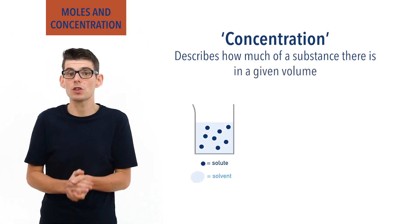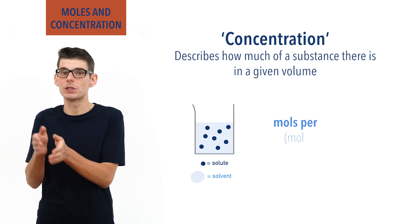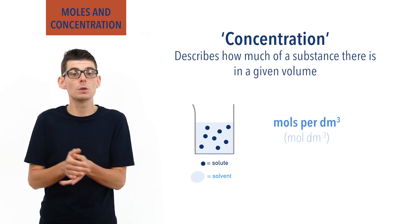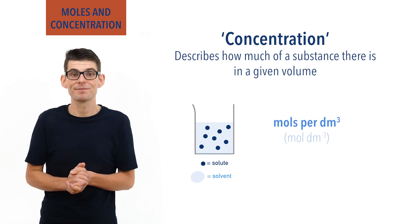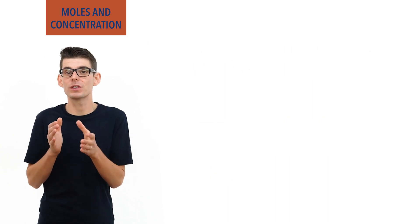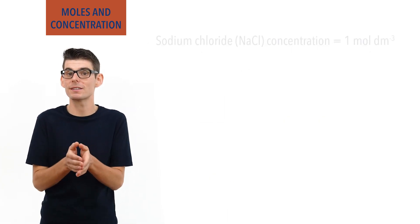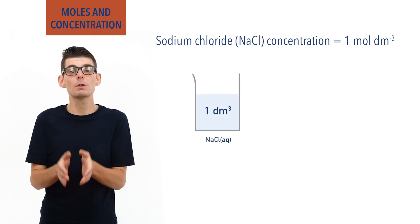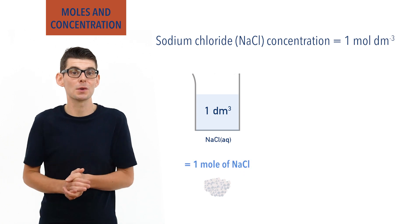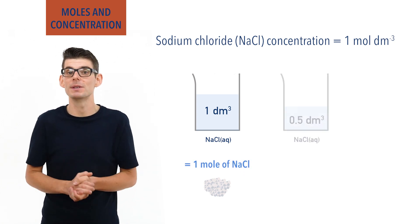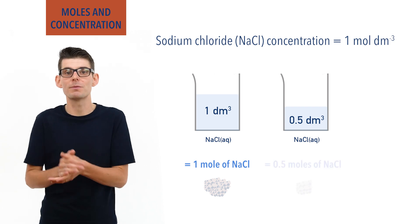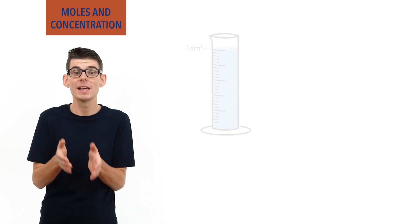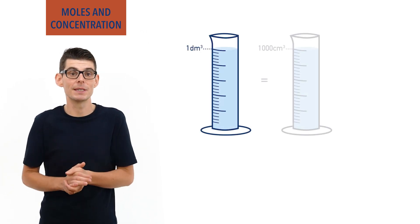The usual unit for concentration is moles per decimetre cubed, with moles describing the amount of substance and one decimetre cubed being used as a reference volume. For example, if the concentration of a sodium chloride solution is 1 mol/dm³, that means in one decimetre cubed of the solution there would be one mole of sodium chloride. Equally, in half a decimetre cubed there would be 0.5 moles of sodium chloride. 1 decimetre cubed is the same volume as 1000 centimetres cubed.